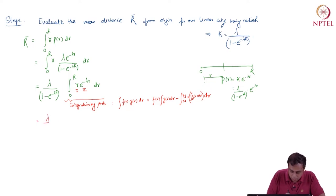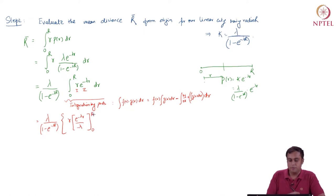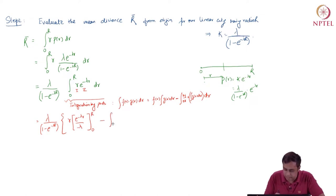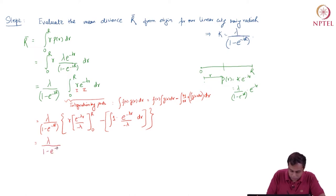Applying this formula with lambda over (1 minus e^{−λR}) sitting outside, we take r as the first function and e^{−λr} as the second. The result evaluated between 0 and R gives: r times e^{−λr} over (−λ), minus the integral of 1 times e^{−λr} over (−λ) dr.